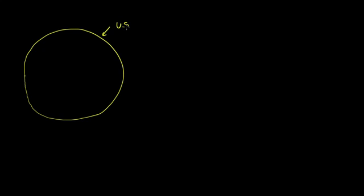What I want to do in this video is think a little bit about how the unemployment rate is actually computed by the Bureau of Labor Statistics. So to figure that out, let's just start off with the entire U.S. population. So let me draw a big circle here that represents the entire U.S. population. And right now, if my numbers are correct, the latest numbers are 304 million people.